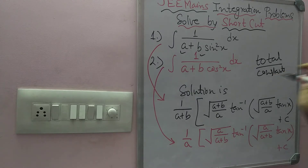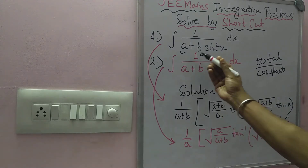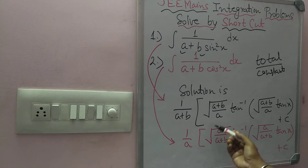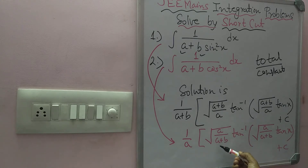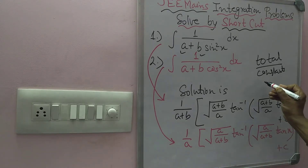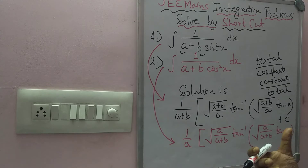Now for the format 1 upon (a plus b·cos²x), the solution is: 1 upon a, times the square root of a upon (a plus b), times tan inverse of root under (a upon a plus b) into tan x, plus c. In this case it is constant upon total — memorize it as constant upon total for the cos²x format.